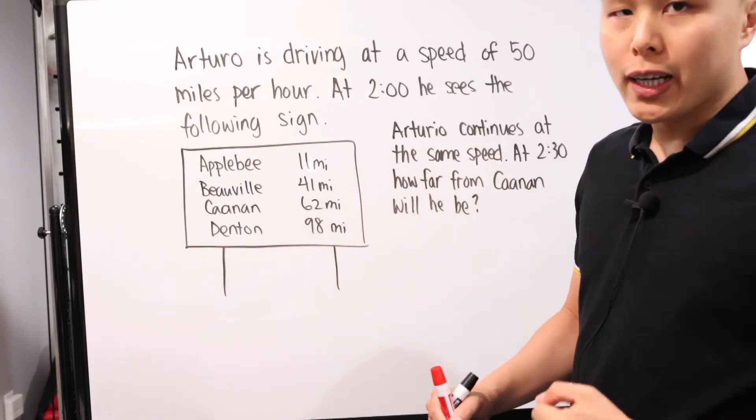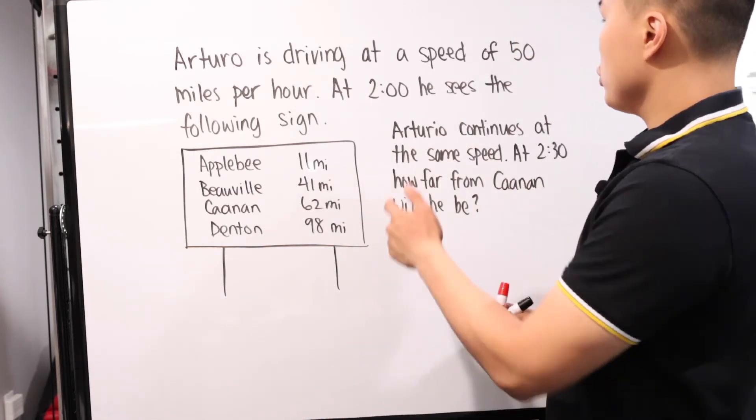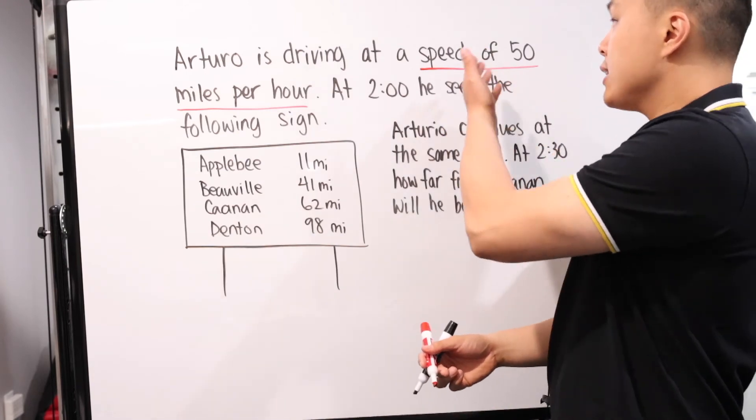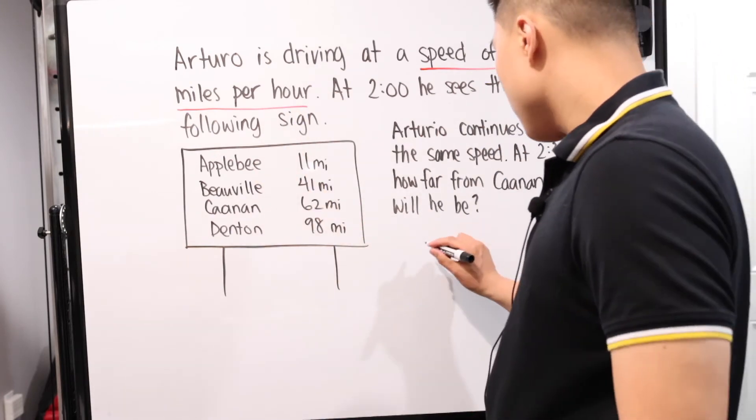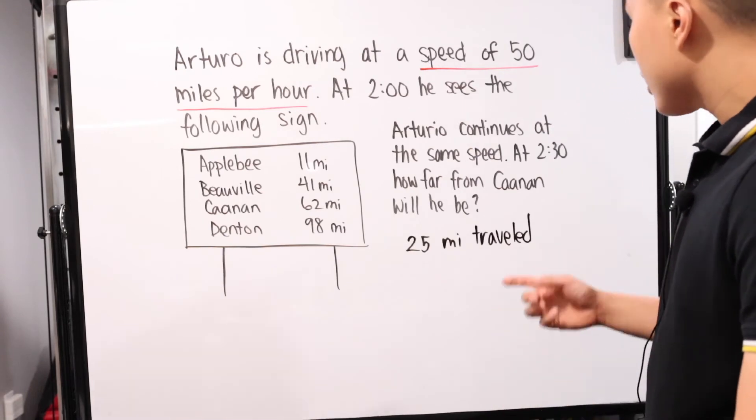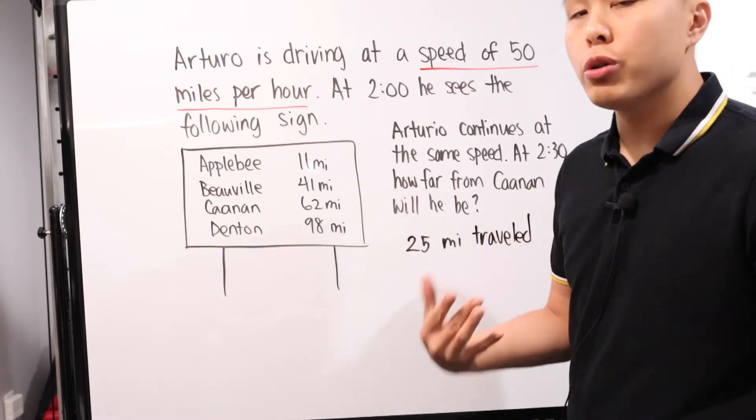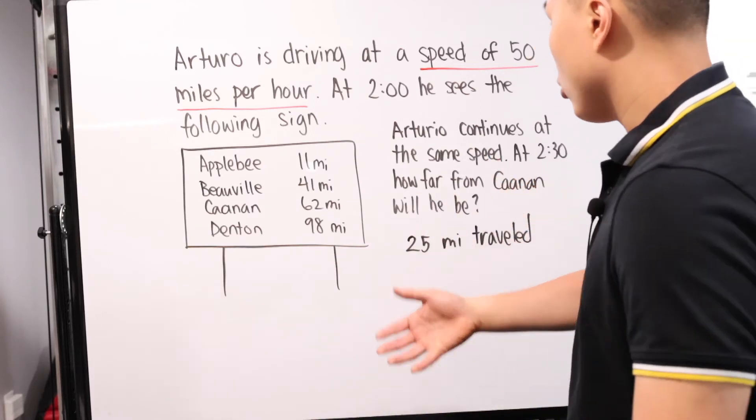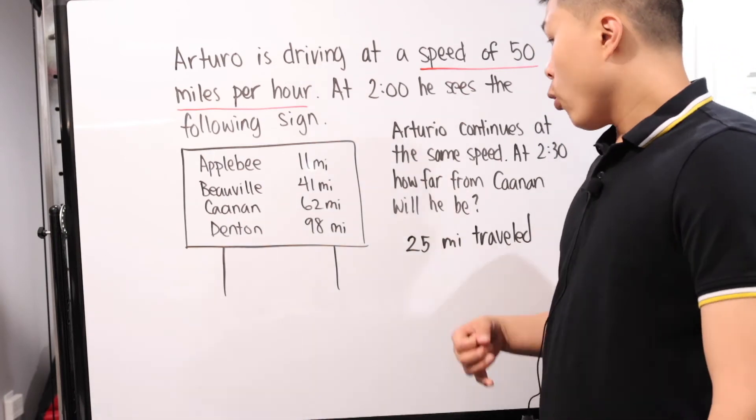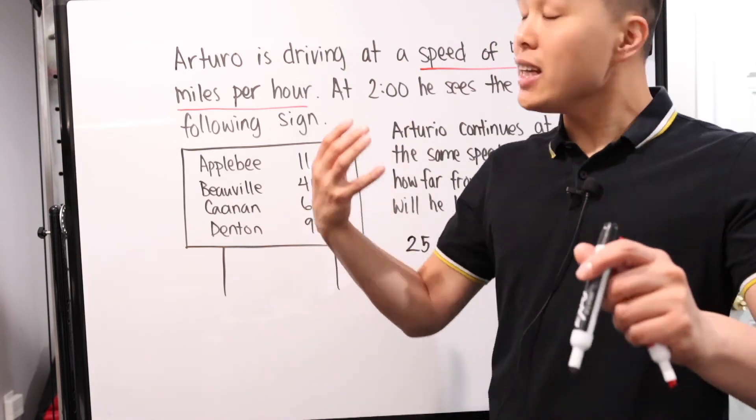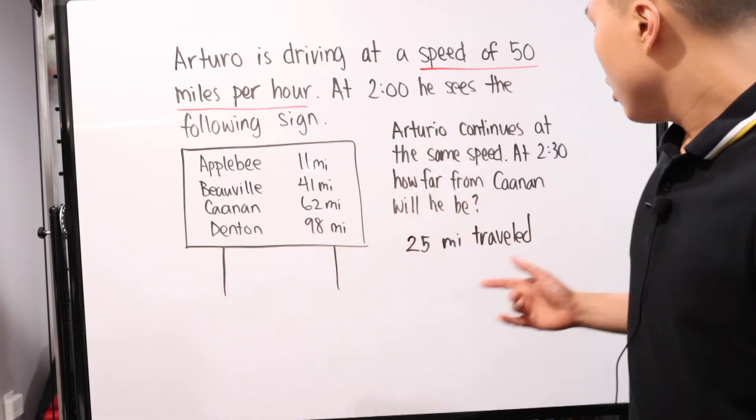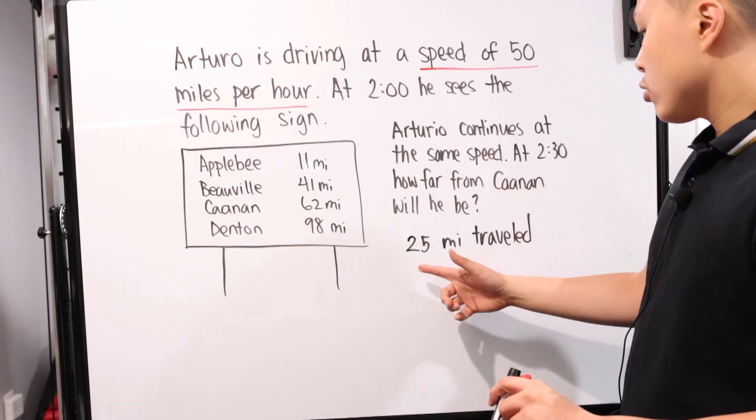Basically it's just gathering information, understanding the problem, and then basically doing simple subtraction. Because at this current point at 2 o'clock he sees this sign. That's how far away he is compared to each and every one of these destinations. So at 2:30, that means he's driven another half an hour. What do we know? We know the speed is 50 miles per hour. And since he's going half of it, half an hour, instead of at the full 50 miles he's basically going half of that, 25 miles. So that's how much he traveled. Just be very careful of how much time passed, because guess what, if it's an hour, if it's 3 o'clock, then yes he's driven 50 miles. If it's half of that then he's driven basically half of it, 25 miles.